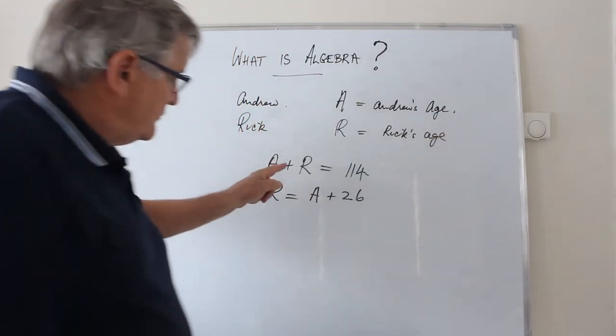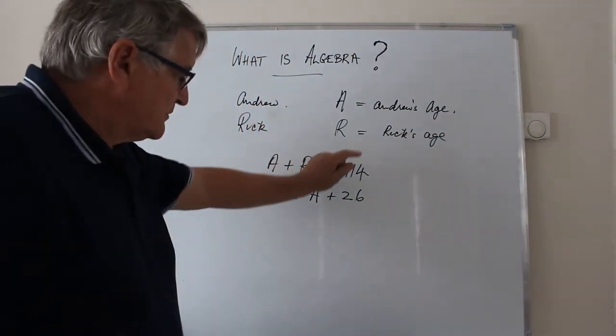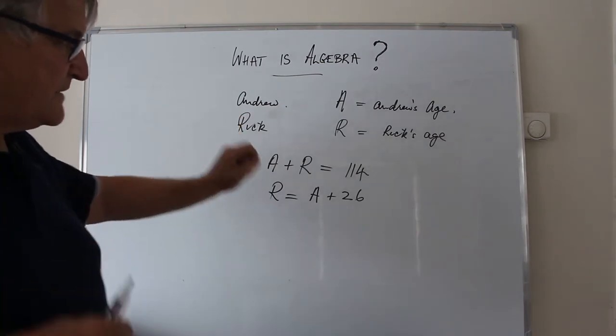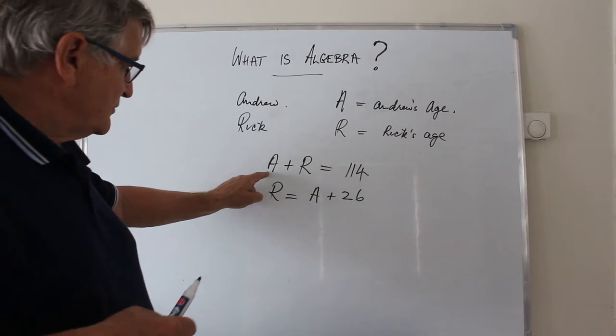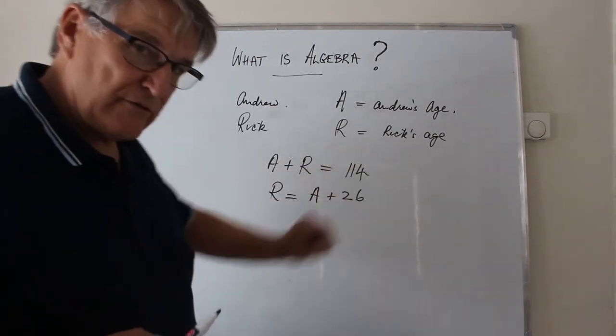And we've used algebraic equations to express the relationships between these quantities. Andrew's age plus my age adds to 114.